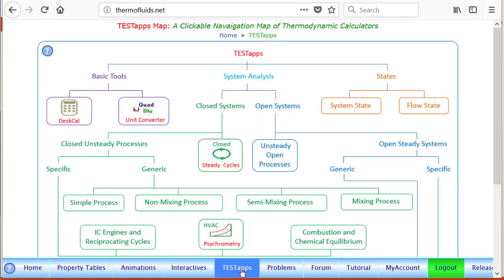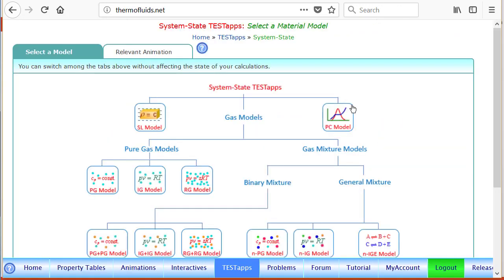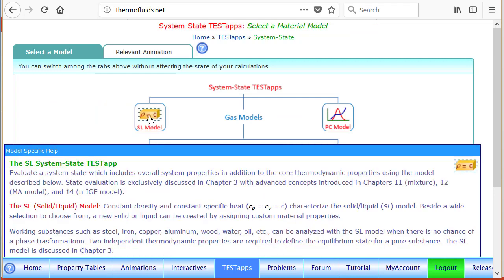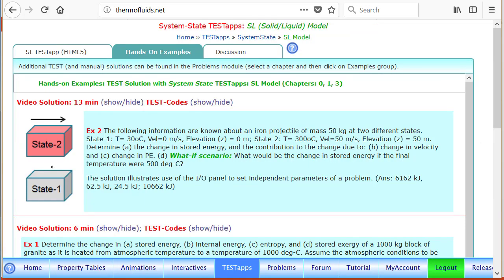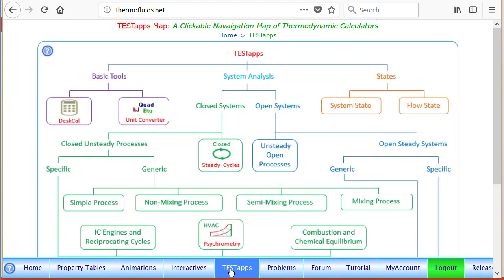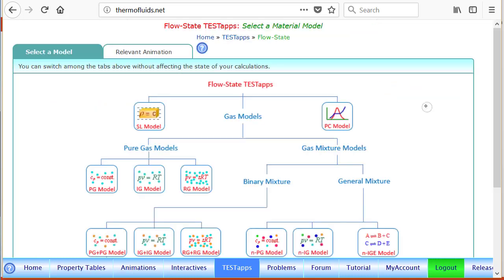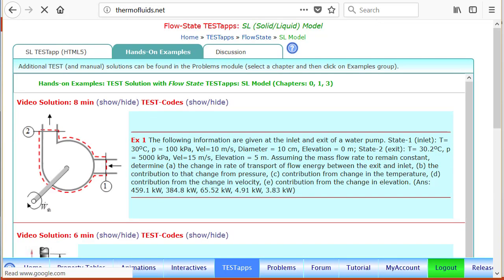By the way, this particular video is going to build up on the system state SL model. We have solved the problem. This is the blueprint, so go over this problem first. I'm assuming you already have gone over this solution. And to solve the flow state problem, we'll follow the similar procedure. So we go to the test steps states, flow states. And the material, the thermodynamic model to consider is the SL model. And that launches our app.